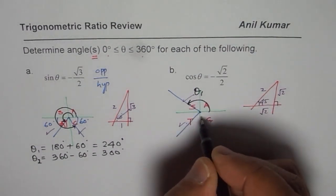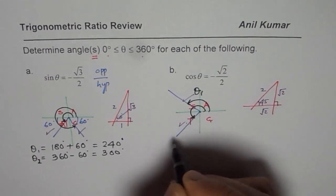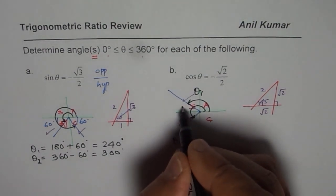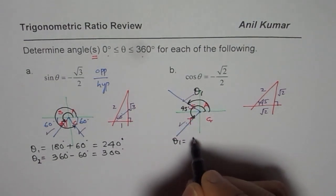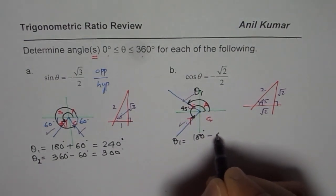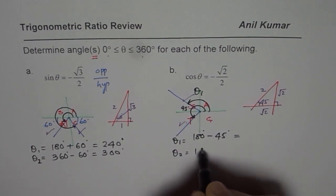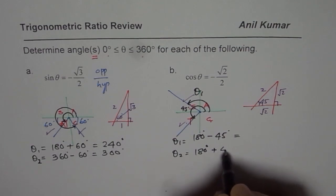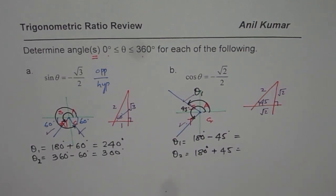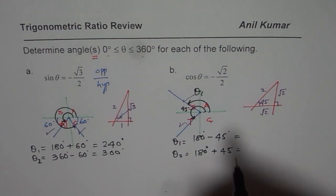This is θ₁ and then we have that much. In this case, θ₁ is—since this is 45—θ will be 180 degrees minus 45 degrees. And the other angle has to be 180 degrees plus 45 degrees. That is how you should be answering this question.